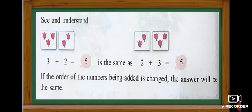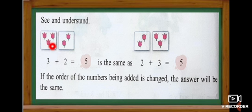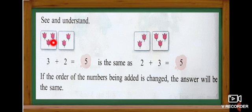Look at here. How many flowers are there in this box? One, two, three flowers. And look at the next box — how many flowers? One, two. So in the first box we have three flowers and in the next box we have two flowers. Totally: one, two, three, four and five. When we add three plus two we get number five.